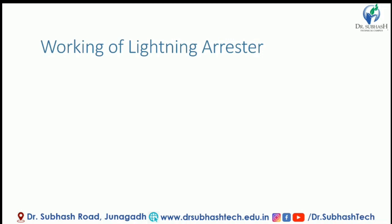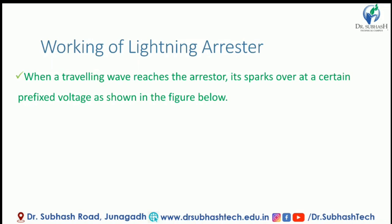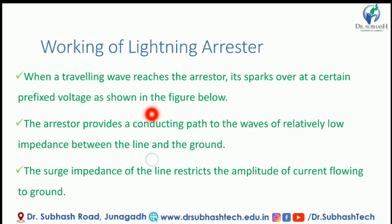When a travelling wave reaches the Arrestor location, the Lightning Arrestor sparks over at a certain prefixed voltage. The Arrestor provides a continuing conducting path to the waves, with a relatively low impedance path between line and ground. The Arrestor provides a direct path to the waves, and the surge impedance of the line restricts the amplitude of current flowing to the ground.